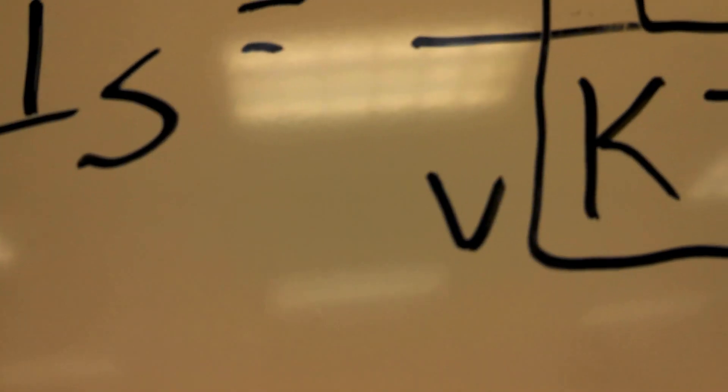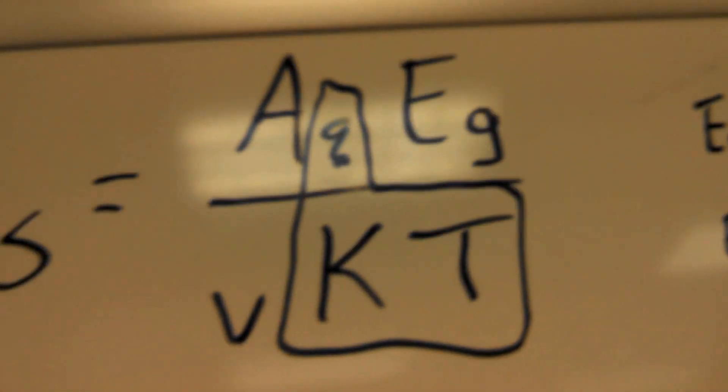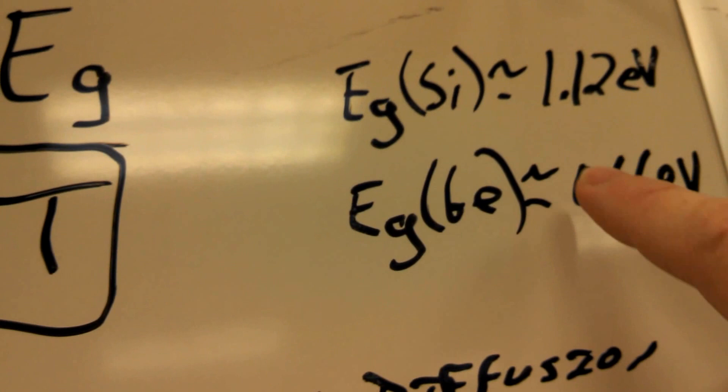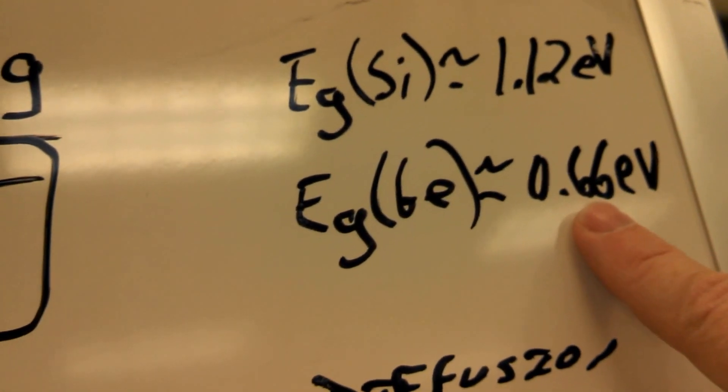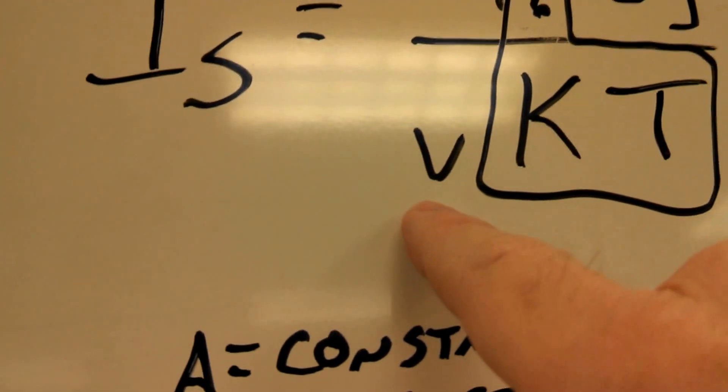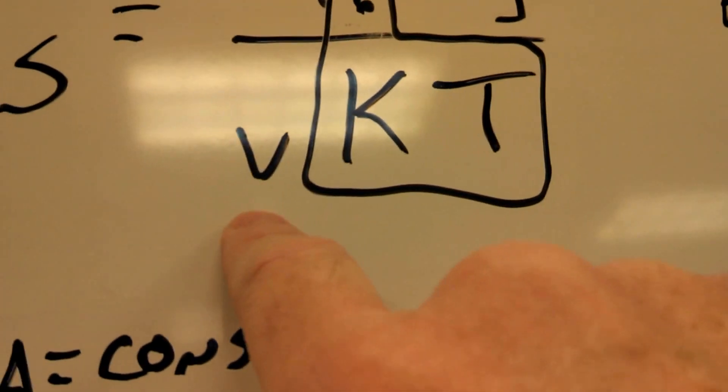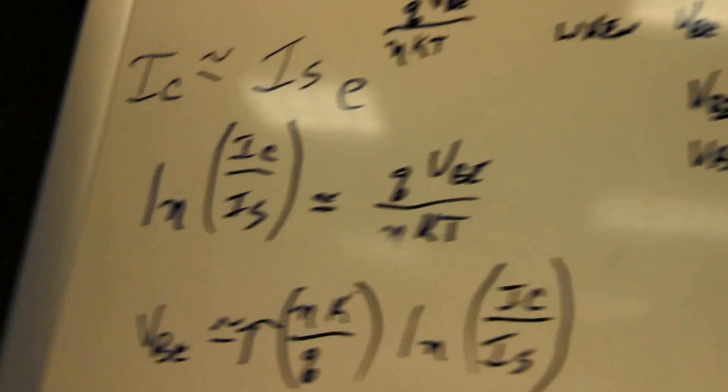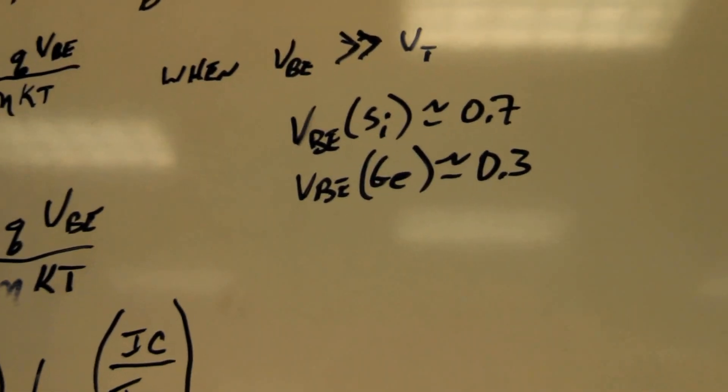So E sub G is the band gap of the semiconductor, which for silicon is 1.12 electron volts. For germanium it's about 0.66. I believe that this V is the same as this N, which is a quality constant, but I'm not absolutely sure. I haven't been able to dig that out of my literature yet.